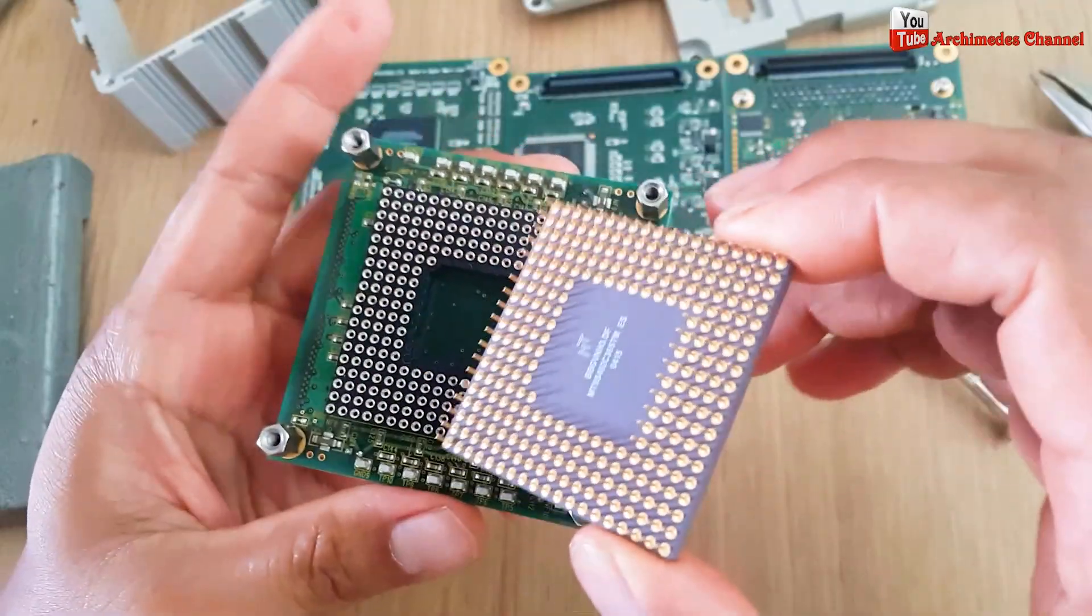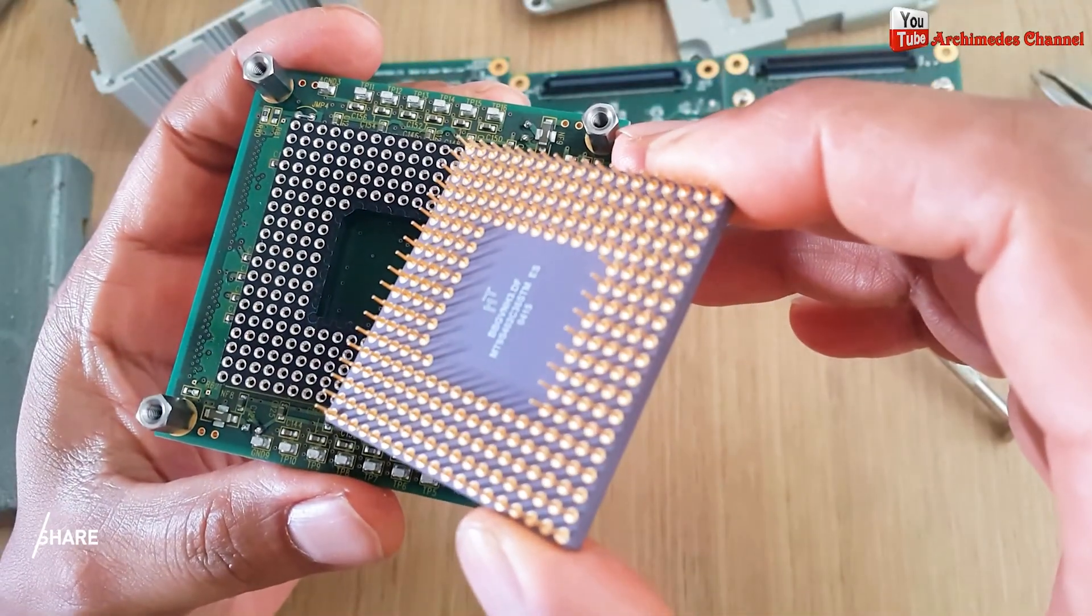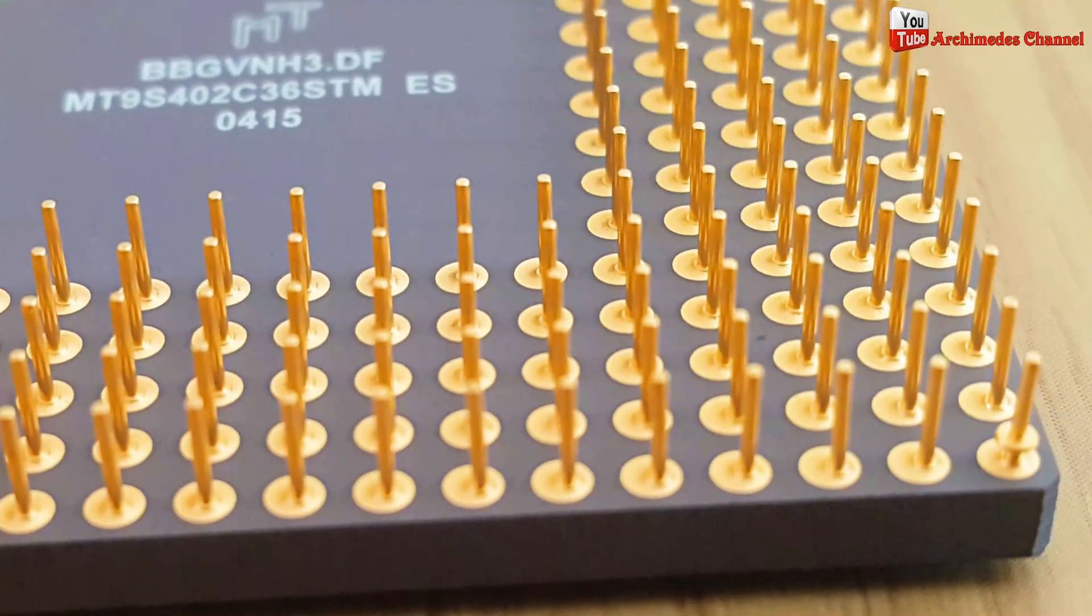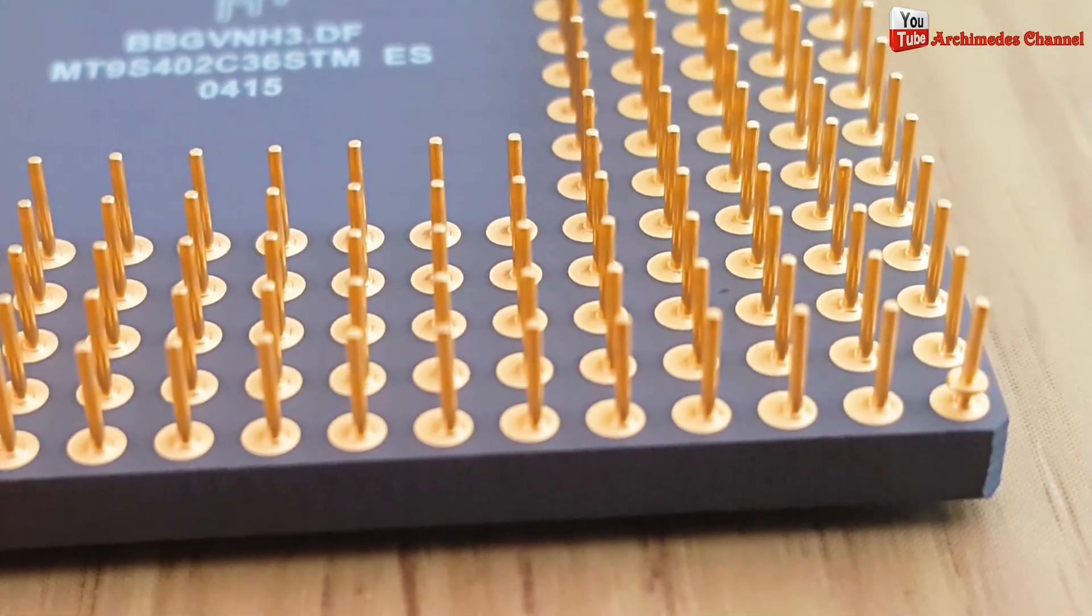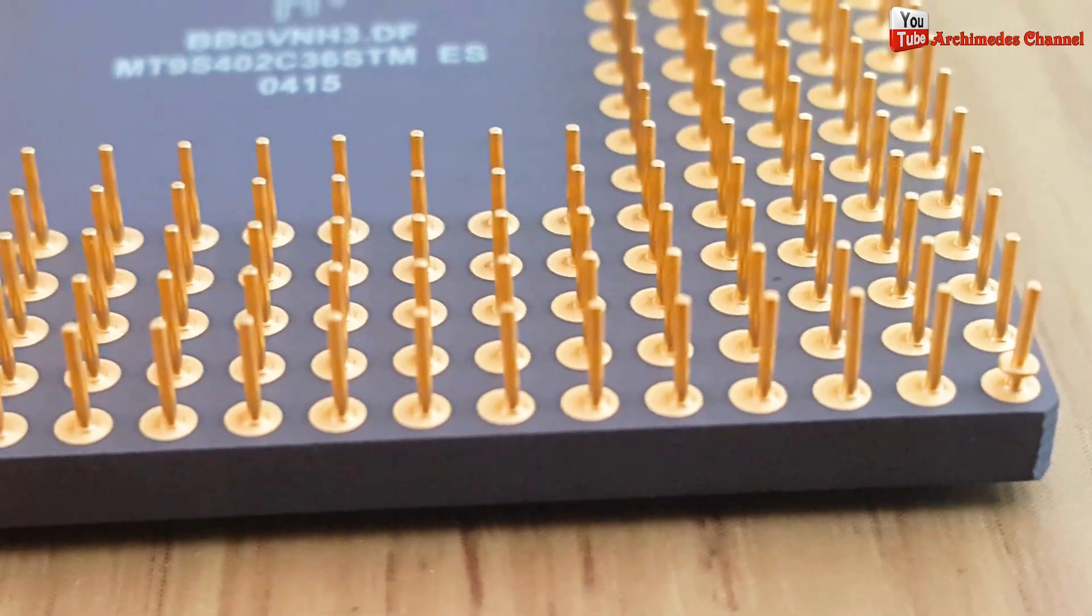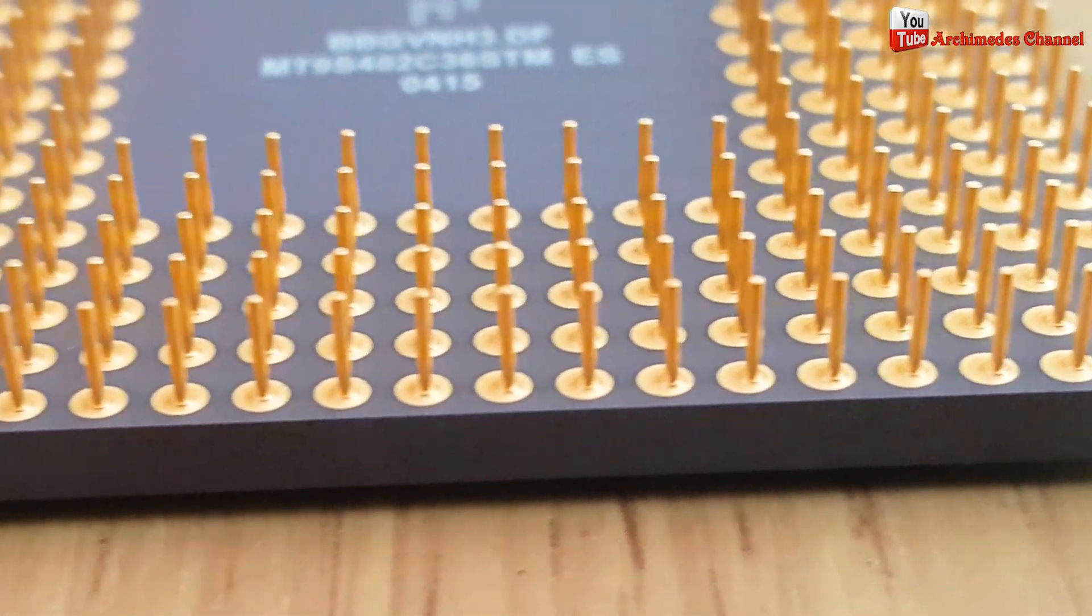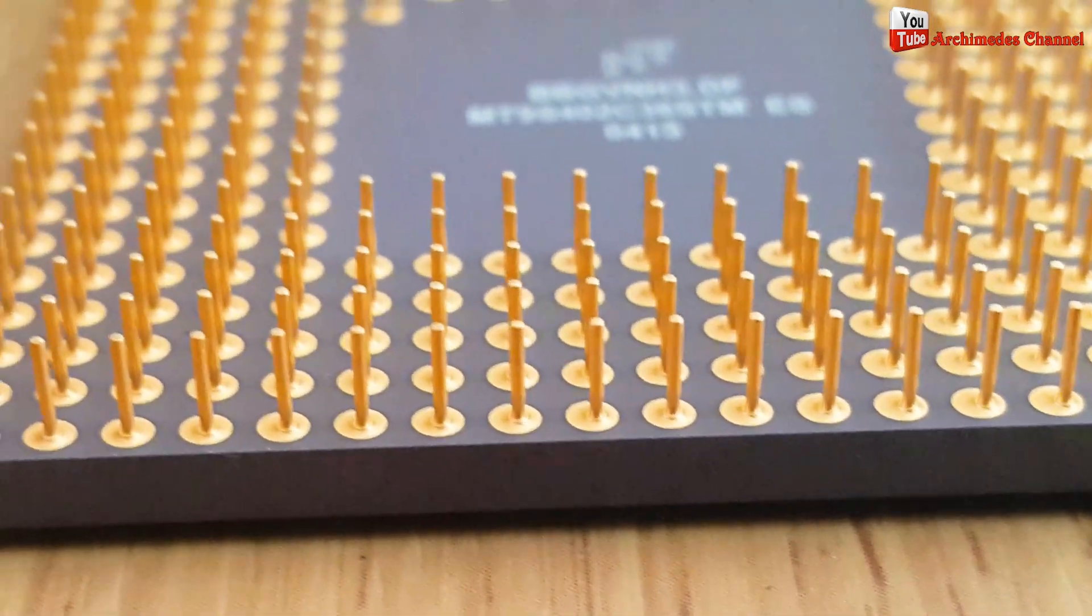The process of e-waste recycling typically begins with the collection and transportation of electronic waste to a recycling facility. Once at the facility, the electronic waste is sorted and separated into different materials such as plastics, metals and glass.